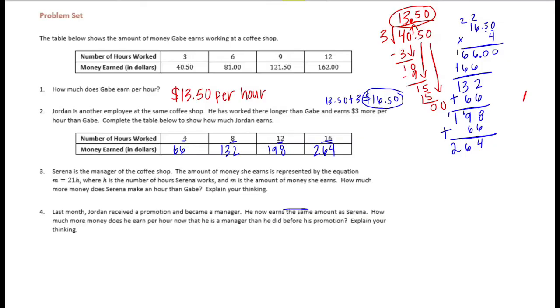So she makes 21H. If we multiply the amount of money, we multiply 21, let's say per hour. So we want to know times 1 hour. That means that she's making $21 per hour.